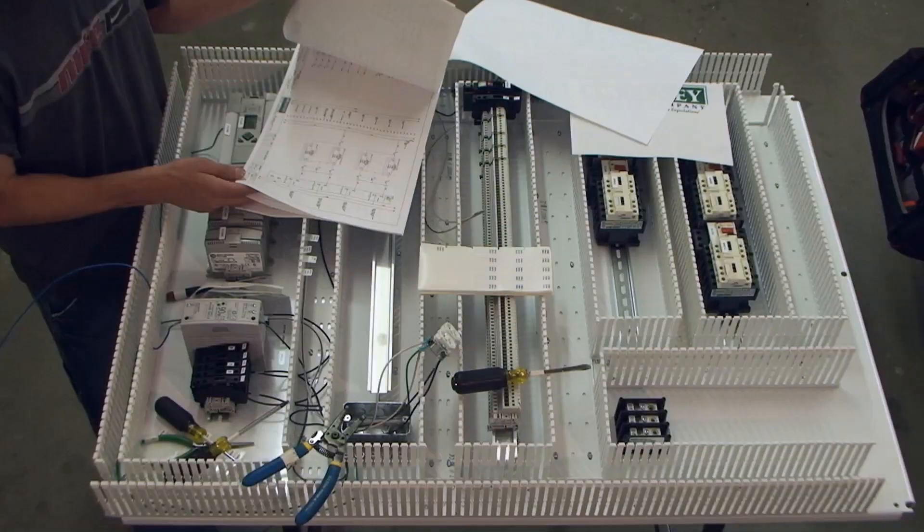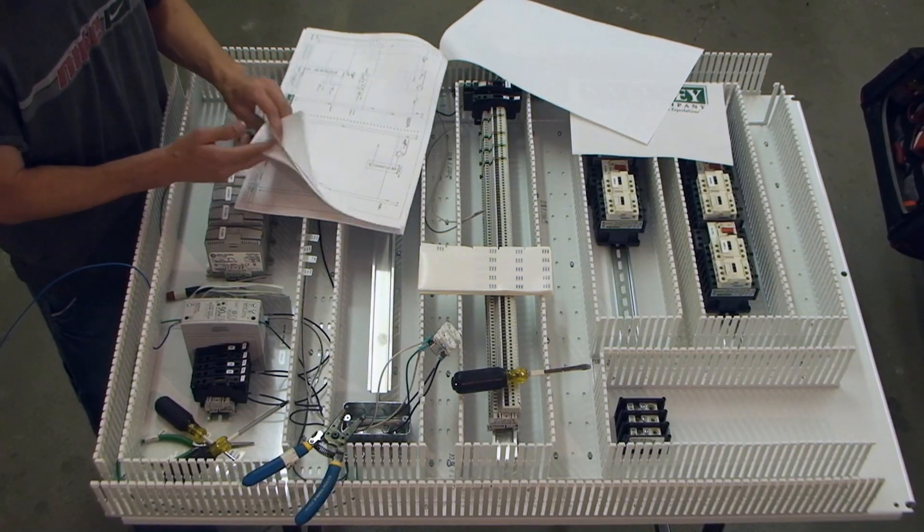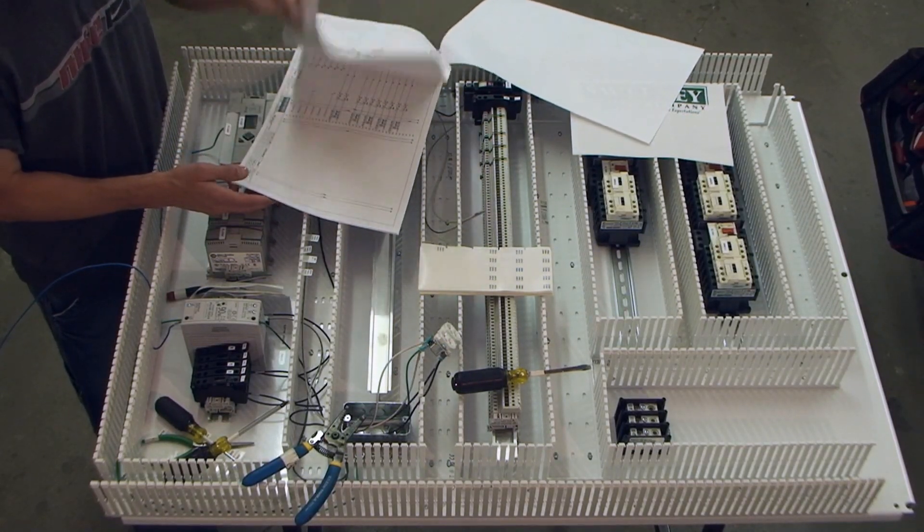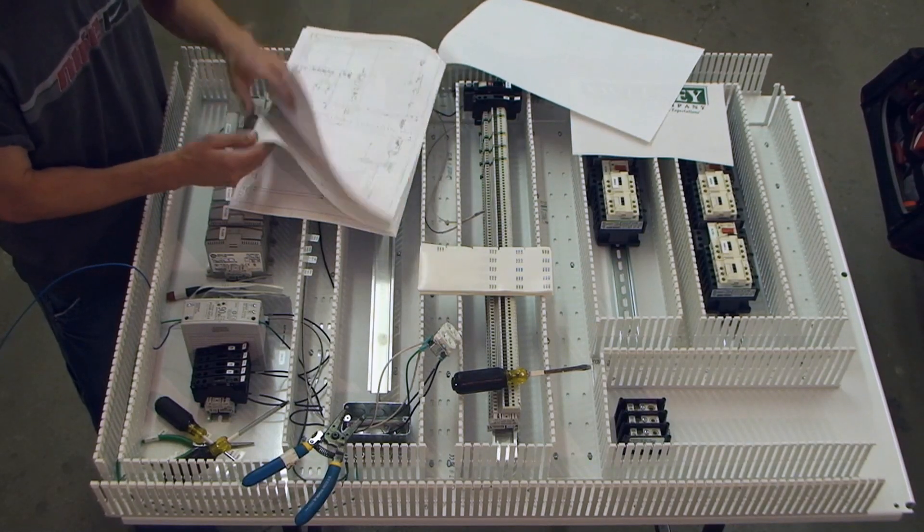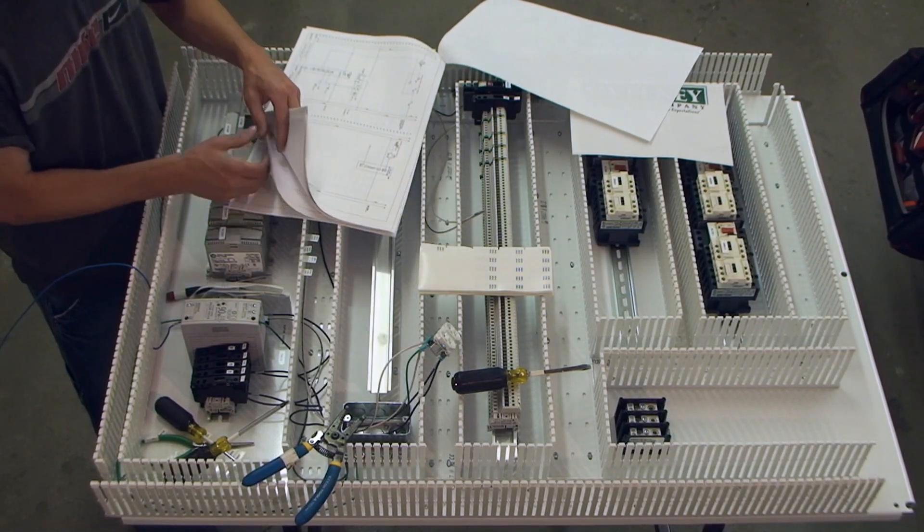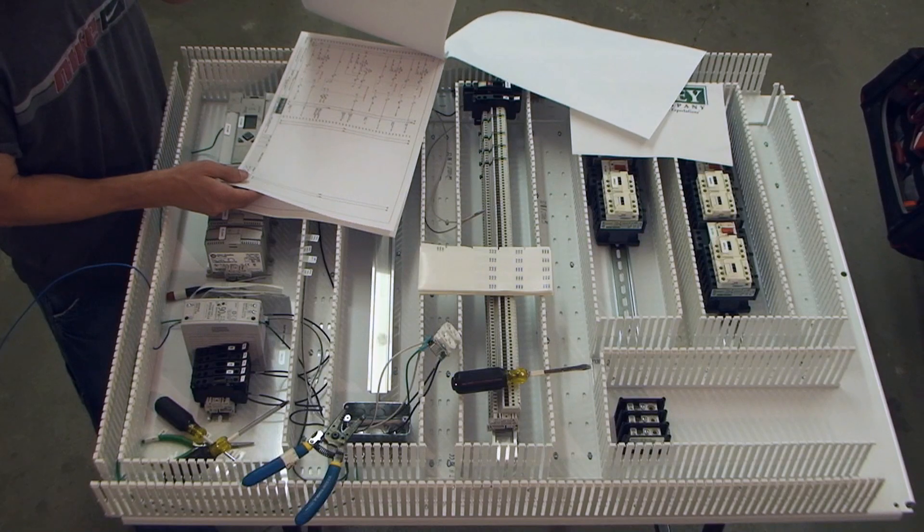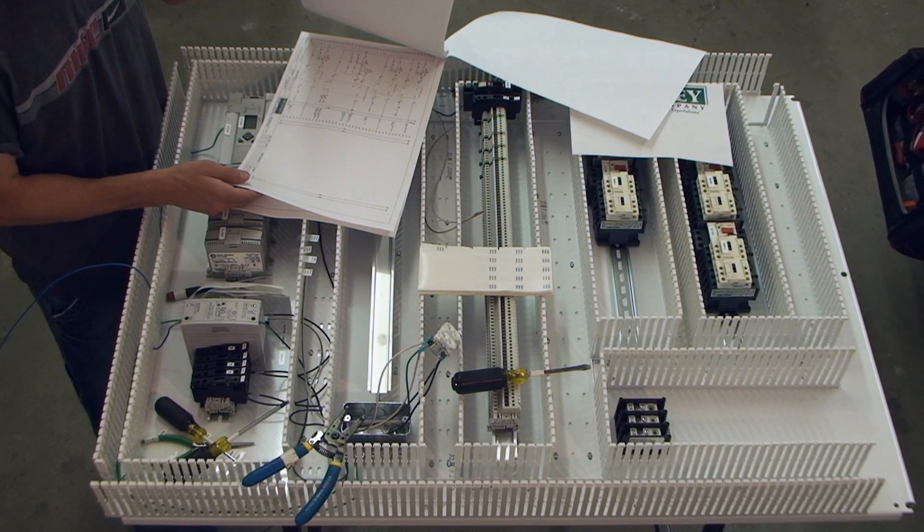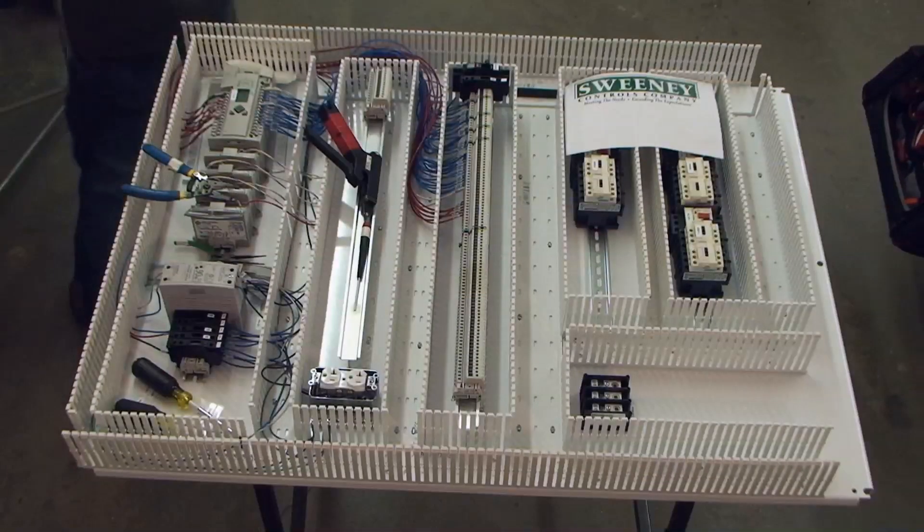The control panel. Each wire in the control panel has a number associated that corresponds to the drawing set. Each wire gets a number attached by a self-laminating label, printed at the beginning of the process.